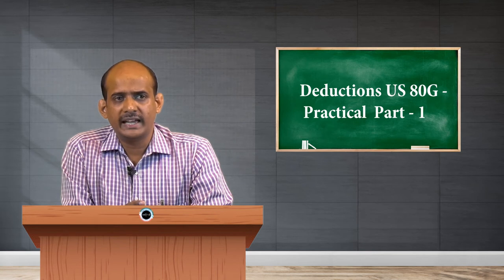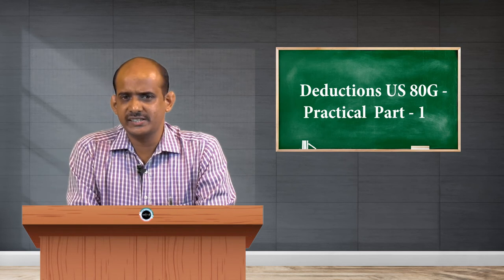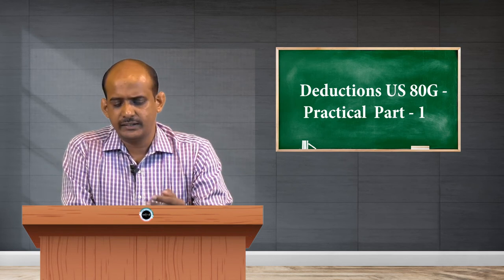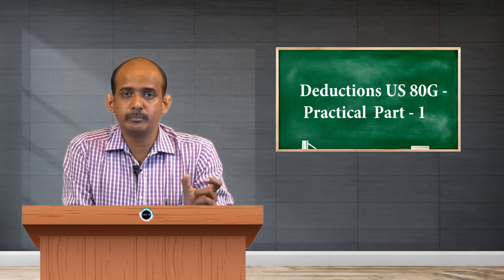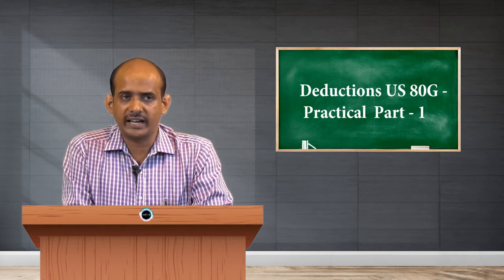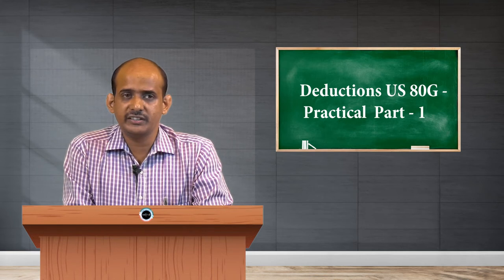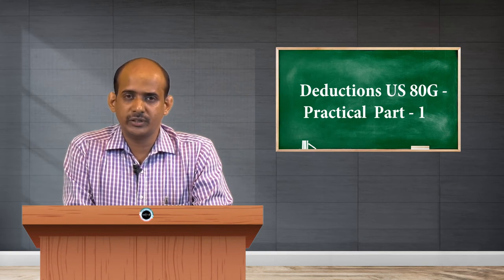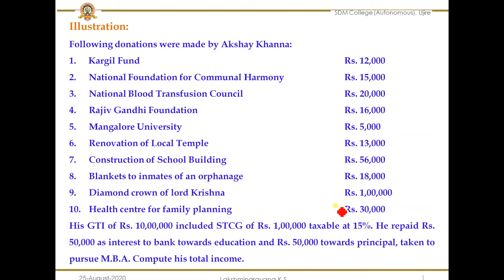Next we see blankets to inmates of an orphanage. The purpose and intention behind giving this donation is appreciable, but we go by the rules. As the donation is given in kind — the word 'blankets' indicates it is not in the form of cash or money but in kind — any donation given in the form of kind is not acceptable as a donation per income tax rules. So this item is not eligible for deduction under Section 80G.